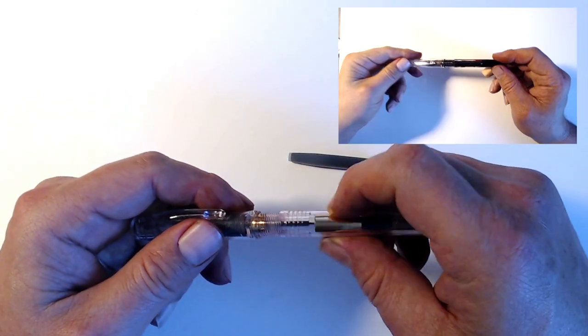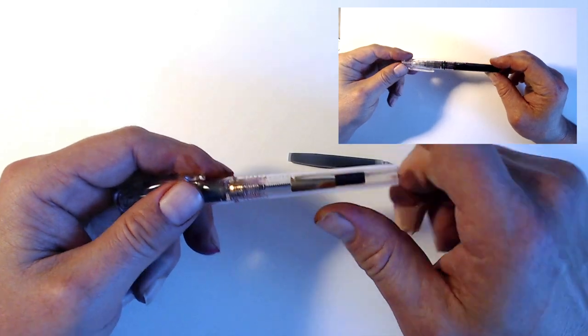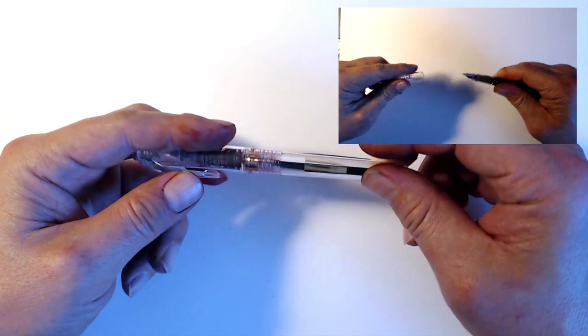However, as an eyedropper, it holds three times as much ink as a cartridge, at around three milliliters. And the Preppy is a relatively small pen.